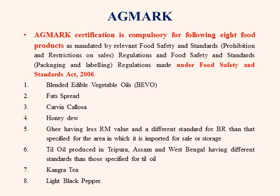AGMARK certification is compulsory for the following eight food products. The first is blended edible vegetable oils. The second is fat spread, which is a product in the form of a water-in-oil emulsion of an aqueous phase and a fat phase of edible oils and fats, excluding animal body fats. The third is Carvia Kelosa, a shrub found in the hills of Western Ghats on the west coast of India, from which honey is derived from flowers that bloom once every seven years. The fourth is normal honey.